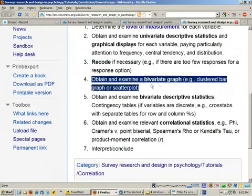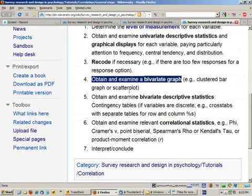Then we can obtain a bivariate graph, such as a clustered bar chart or scatter plot, to visualize the relationship between the two variables.